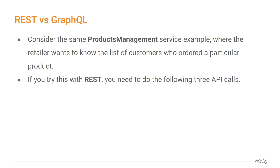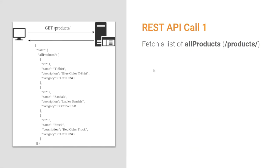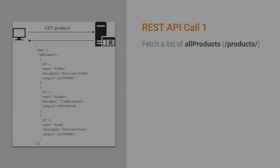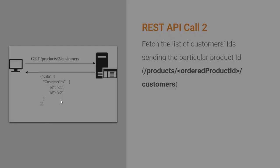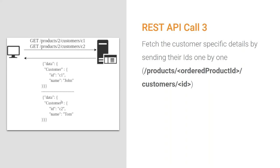If you try this with REST, you need to do three API calls. Initially, you fetch the list of available products by calling the products endpoint. Then, picking product ID 2, you make a second REST API call passing product ID 2 to the customers endpoint, getting customer IDs C1 and C2. As the final REST API call, you fetch the customer-specific data by sending the IDs one by one to the customers endpoint with their customer IDs, receiving the data as John and Tom.